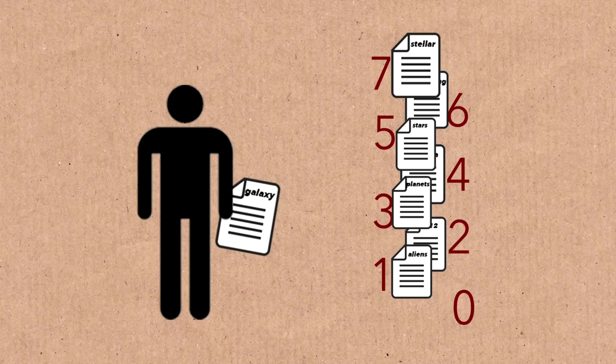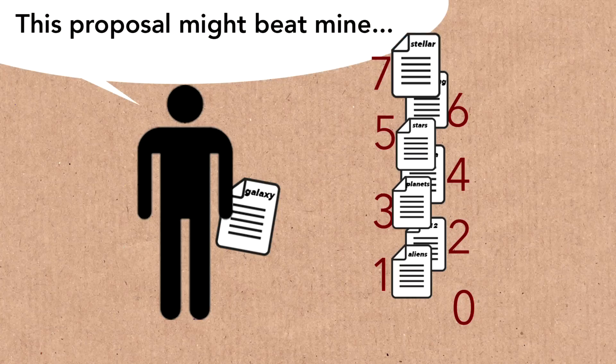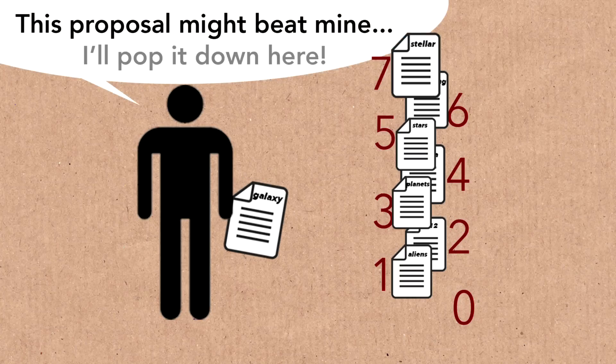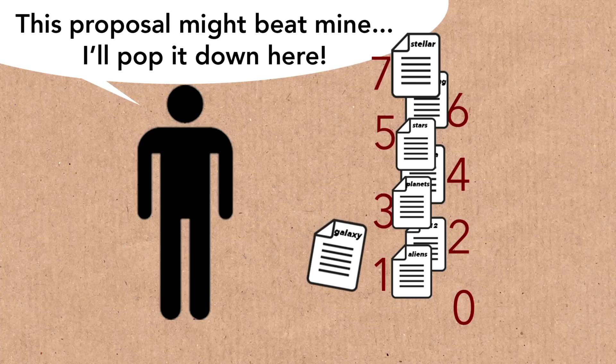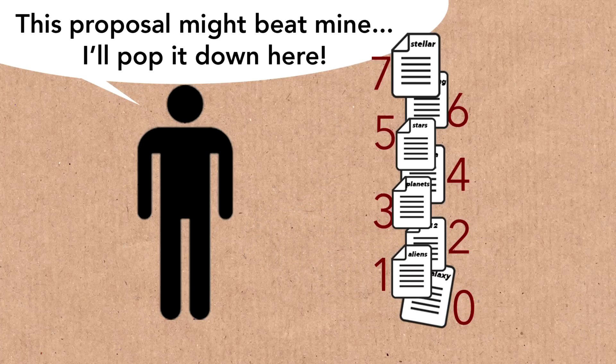Call me a cynic, but one of the first things that comes to mind is: if I'm in this contest and I see a proposal that's outstanding and will definitely beat mine, I have an interest in penalising it and putting it at the bottom of my list. So here's the trick — this gets into mechanism design: how you stop people gaming systems, or at least make them game the system in the way you want.